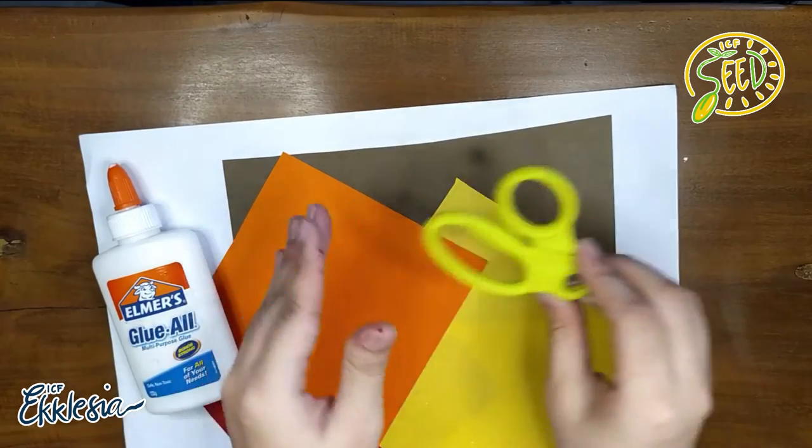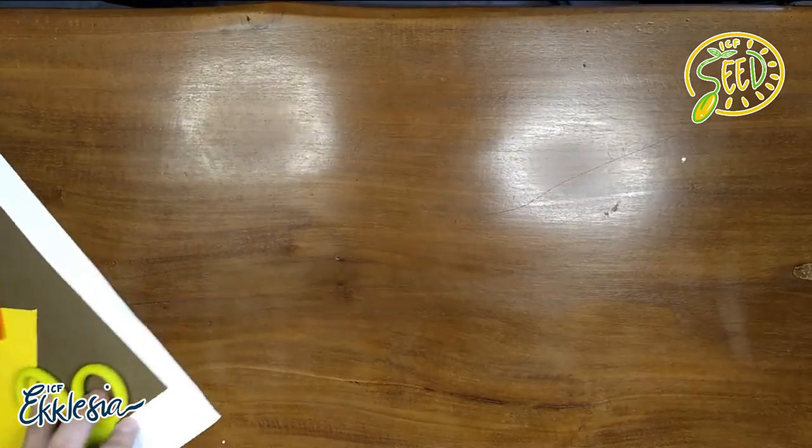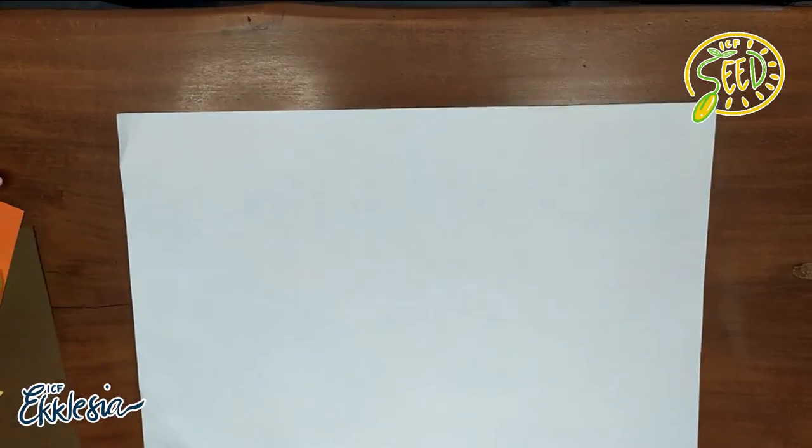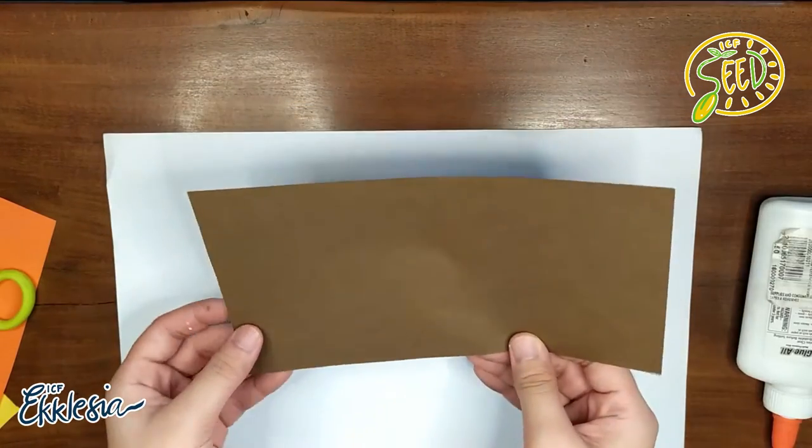Mag-iingat sa pagkamit. Ayan, gableto na tayo. I-lagay muna natin sa isang side at kunin una ang clean sheet ng paper. Sunod, kunin natin yung brown colored paper.